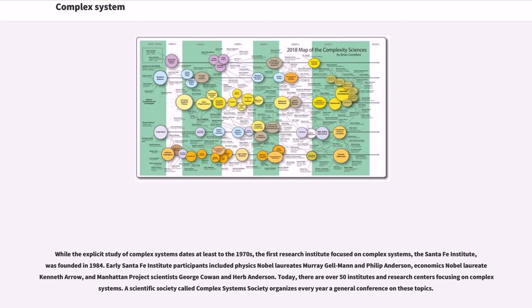While the explicit study of complex systems dates at least to the 1970s, the first research institute focused on complex systems, the Santa Fe Institute, was founded in 1984. Early Santa Fe Institute participants included Physics Nobel laureates Murray Gell-Mann and Philip Anderson, Economics Nobel laureate Kenneth Arrow, and Manhattan Project scientists George Cowan and Herb Anderson. Today, there are over 50 institutes and research centers focusing on complex systems.